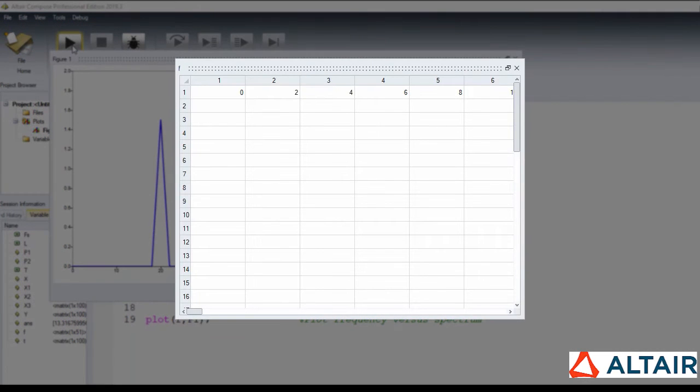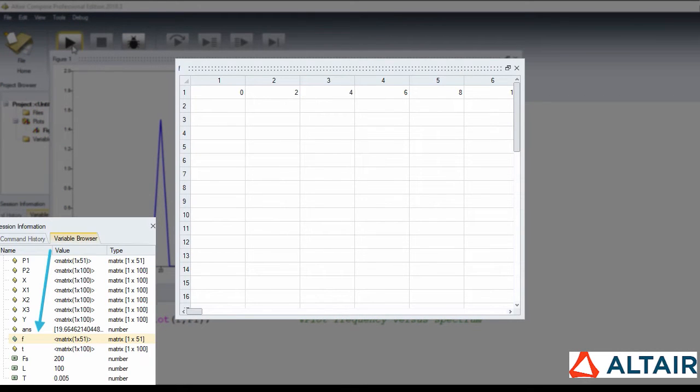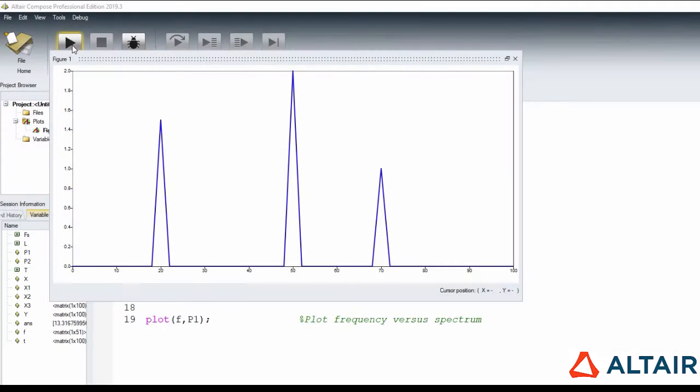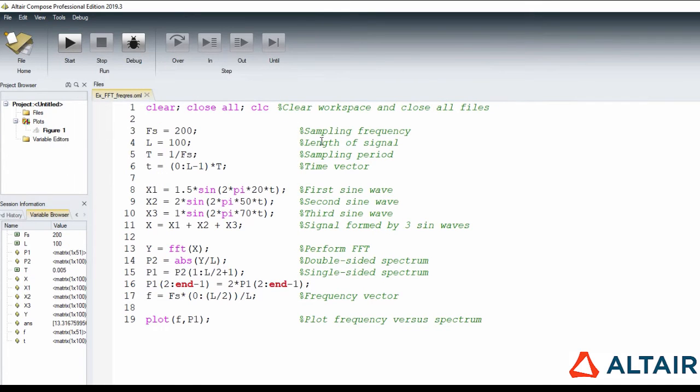We can confirm it, double-clicking on the frequency vector in the variable browser. And what happens if we increase the frequency resolution? In practical terms, it will decrease the number of frequency bends, leading to a larger frequency difference between each one of these bends.